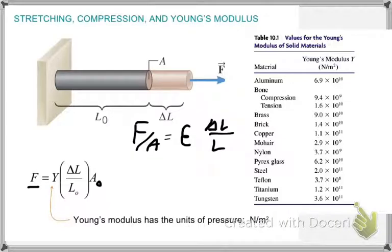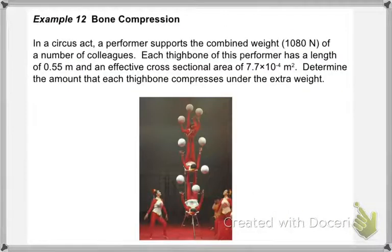As we keep moving along, I'd like to work on this problem for a little bit. We have a circus act. A performer supports the combined weight of 1,080 Newtons of a number of colleagues. Each thigh bone of this performer has a length of 0.55 meters, half a meter, a little more. And an effective cross section, 7.7 times 10 to the negative fourth meter squared. Determine the amount that each thigh bone compresses under the extra weight.